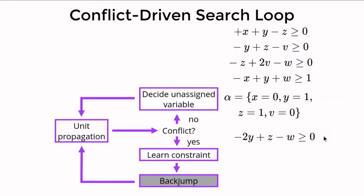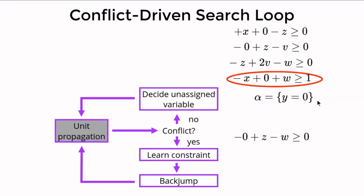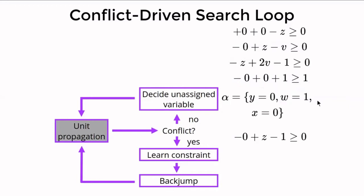We now backjump to a state where the learned constraint is not falsified — back to the root. We continue with unit propagation. Our learned constraint can only be satisfied if y is zero, so we extend the partial assignment. After simplifying, the fourth constraint propagates: x must be zero and w must be one. We keep extending the partial assignment and simplifying. Yet another constraint propagates — the first.